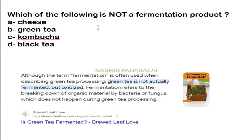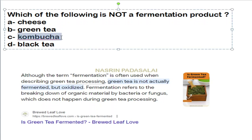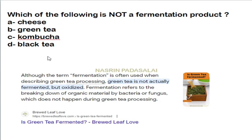Which of the following is not a fermented product? The correct answer is green tea. Cheese, kombucha, and black tea are fermentation products. Green tea is not a fermentation product — it is an oxidation product. Kombucha is a recent health drink belonging to the tea family and is a fermented product.